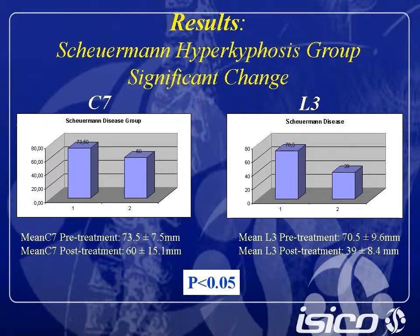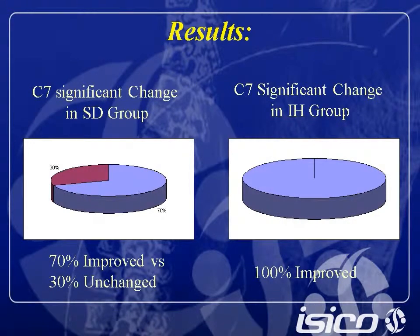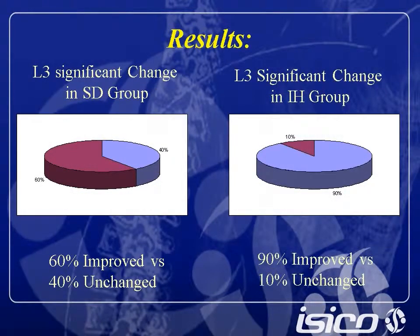Particularly, regarding C7, we found that 70% of patients improved in the Scheuermann's disease group, while all patients improved in the idiopathic hyperkyphosis group. Regarding L3, we found that 60% of patients improved in the Scheuermann's disease group, and 90% of patients improved in the idiopathic hyperkyphosis group.